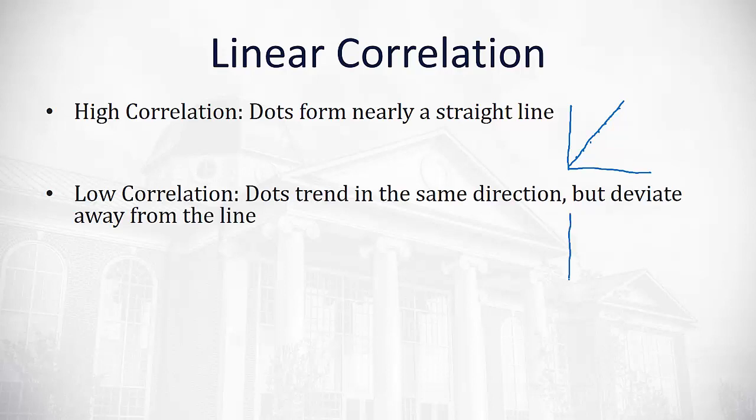A low correlation means the dots are tending to go in the same direction, but they deviate a little bit more from the line of best fit. So, here's an example of negative correlation. But notice those dots are a little more spread out. That's got a much lower correlation than the previous example because the dots are away from the line.